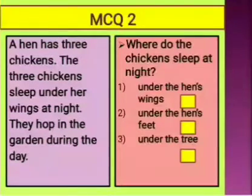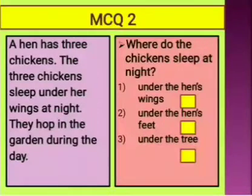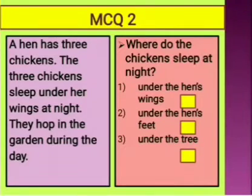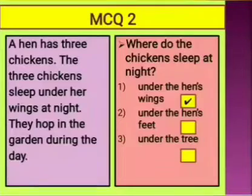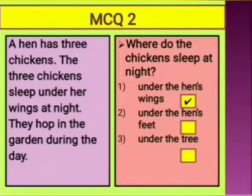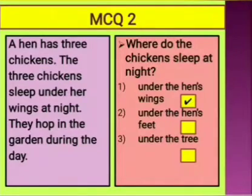The next question is: where do the chickens sleep at night — under the hen's wings, under the hen's feet, or under the tree? Reading the second line: 'The three chickens sleep under her wings at night.' So, under the hen's wings is the correct answer and you can put a tick in front of it.